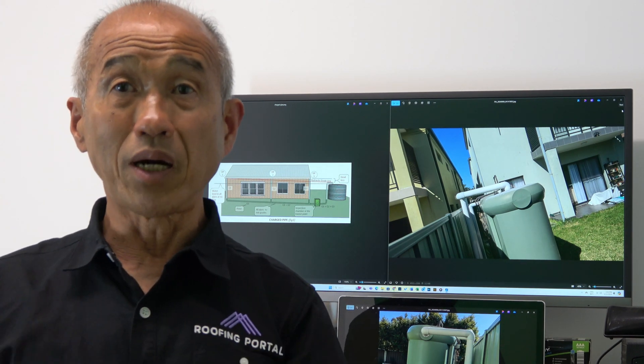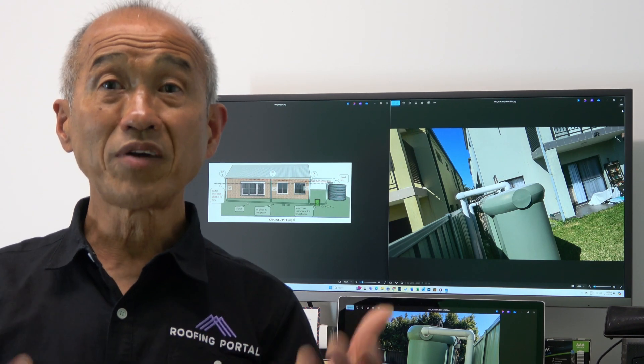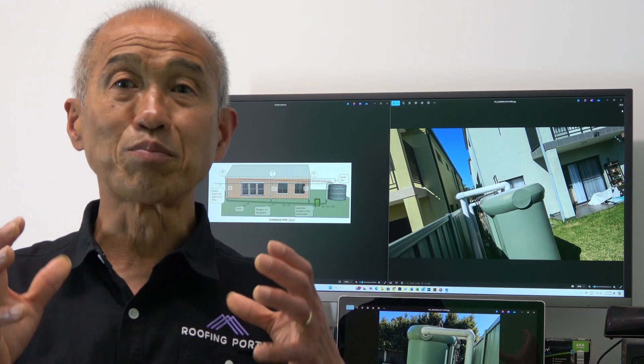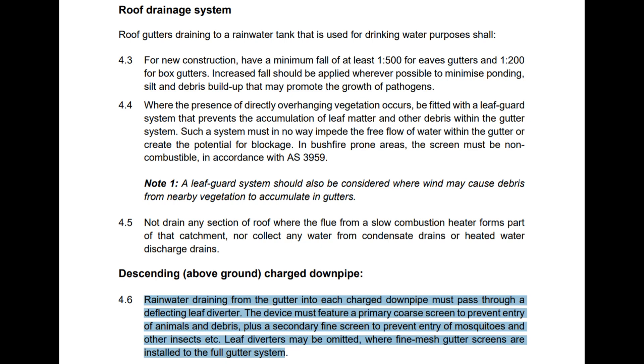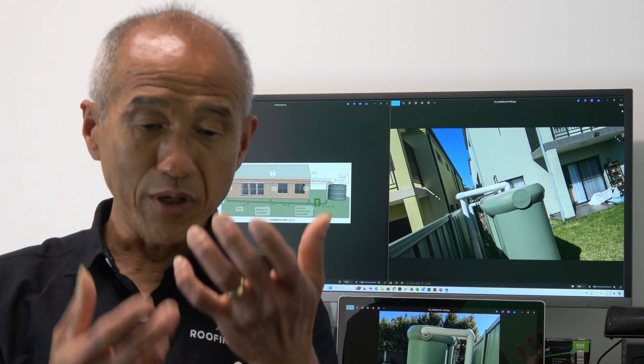So what causes the pipe to block up? Well, many things. When you have a gutter you have debris, and the debris goes into the downpipe. You're supposed to have a leaf diverter to divert most of the large debris away from the downpipe, so what goes into the downpipe is mainly fairly clean water. But if this leaf diverter hasn't been installed or it doesn't work properly, then the debris will go into the downpipe, go underground, and ultimately cause a blockage.